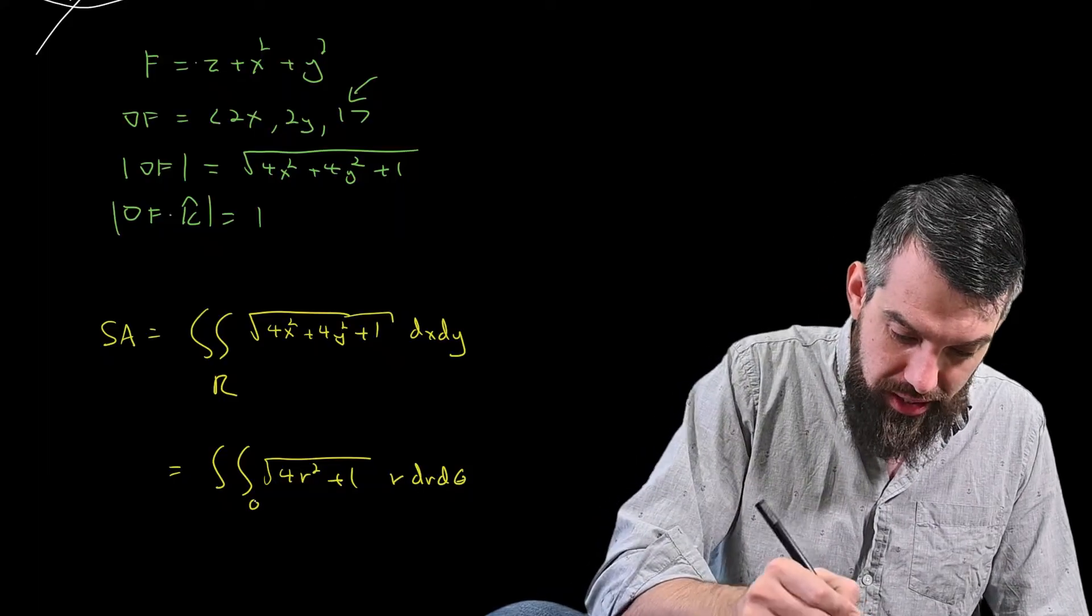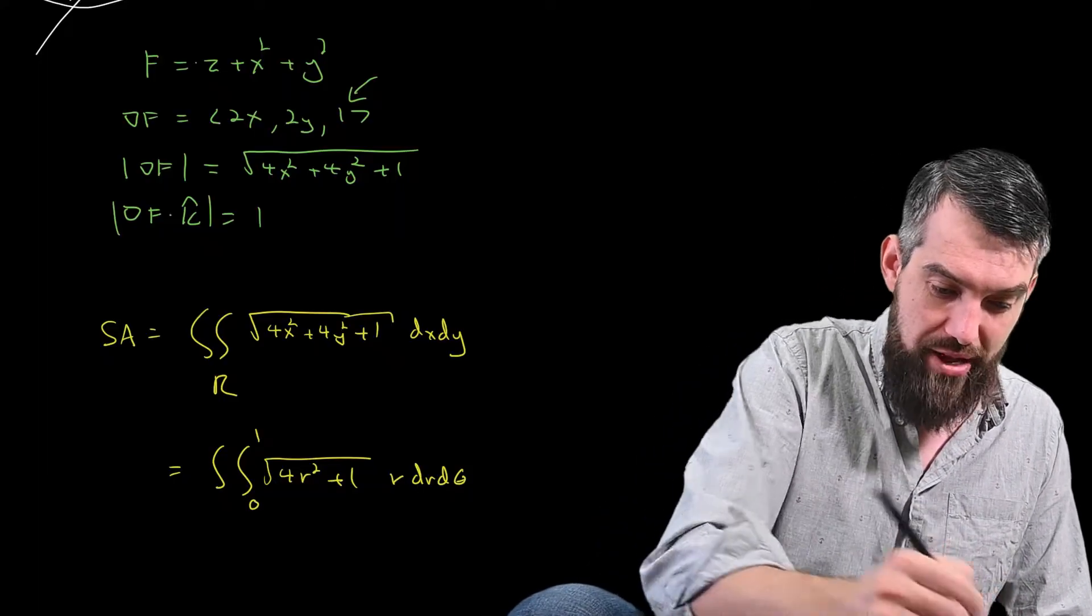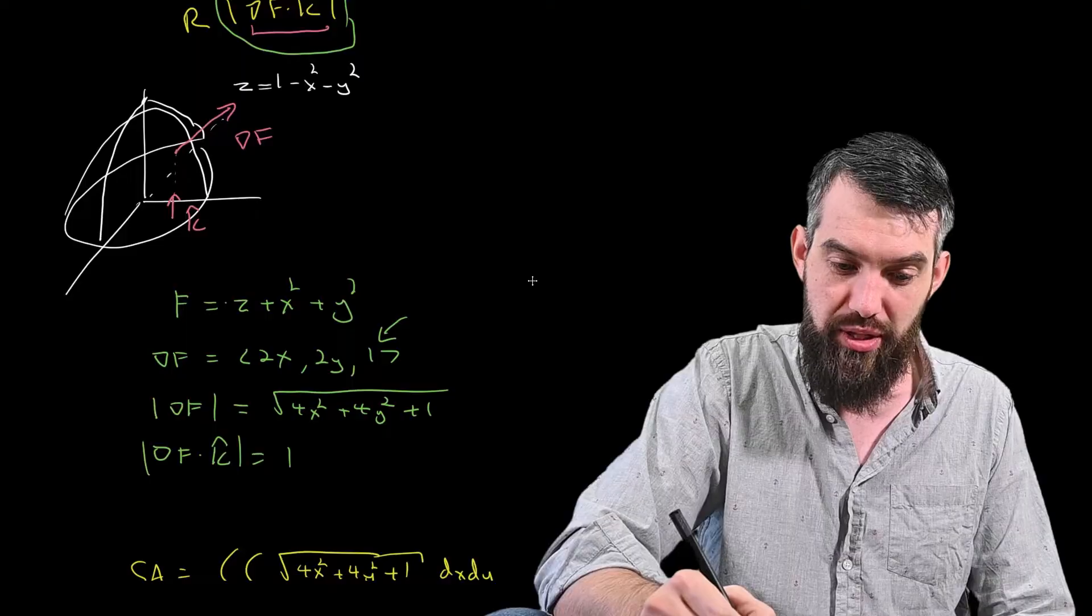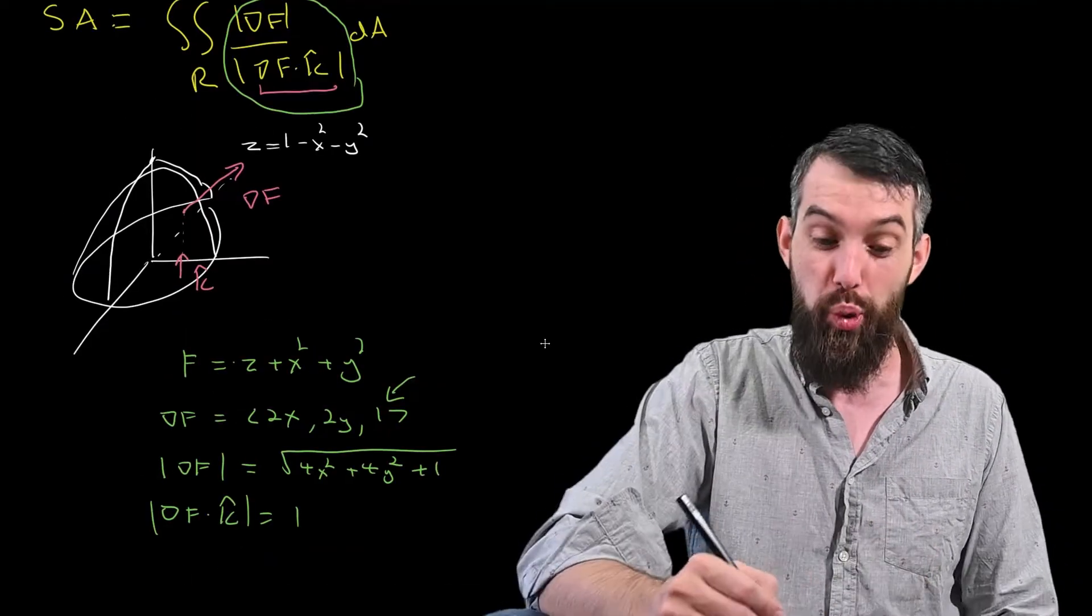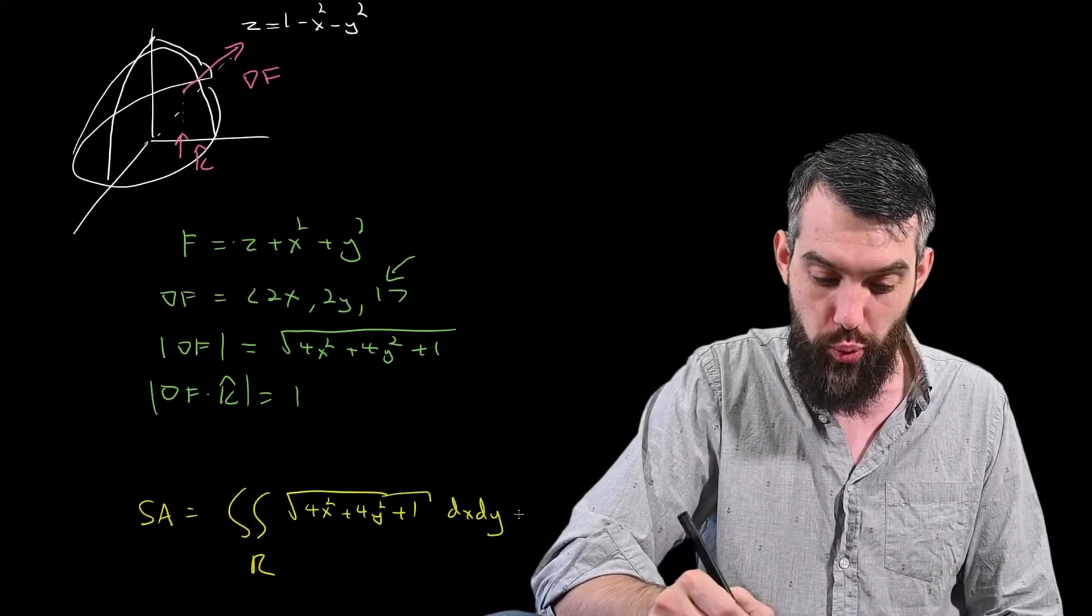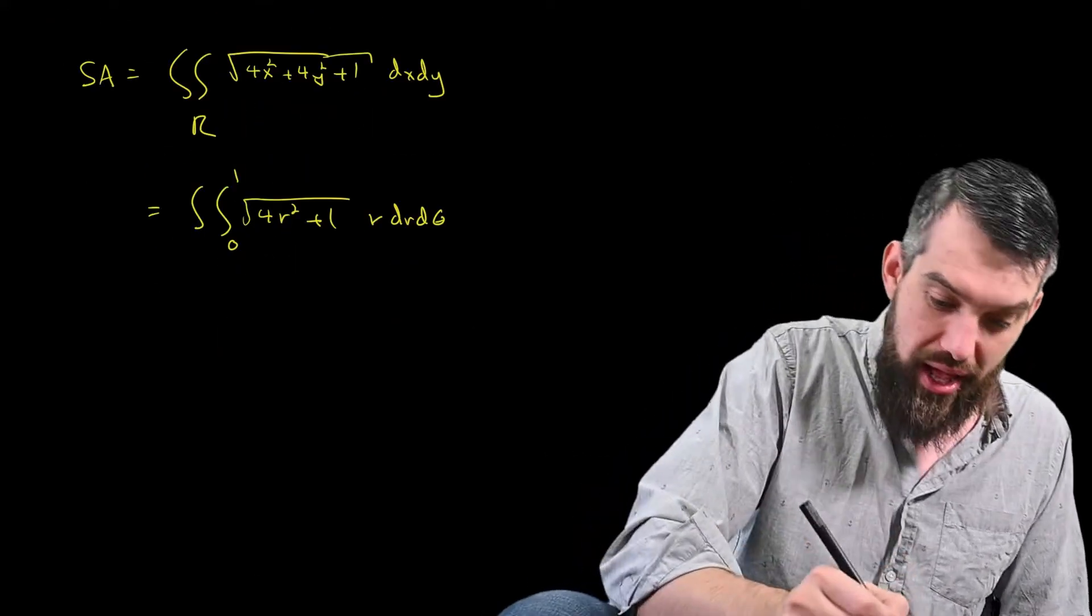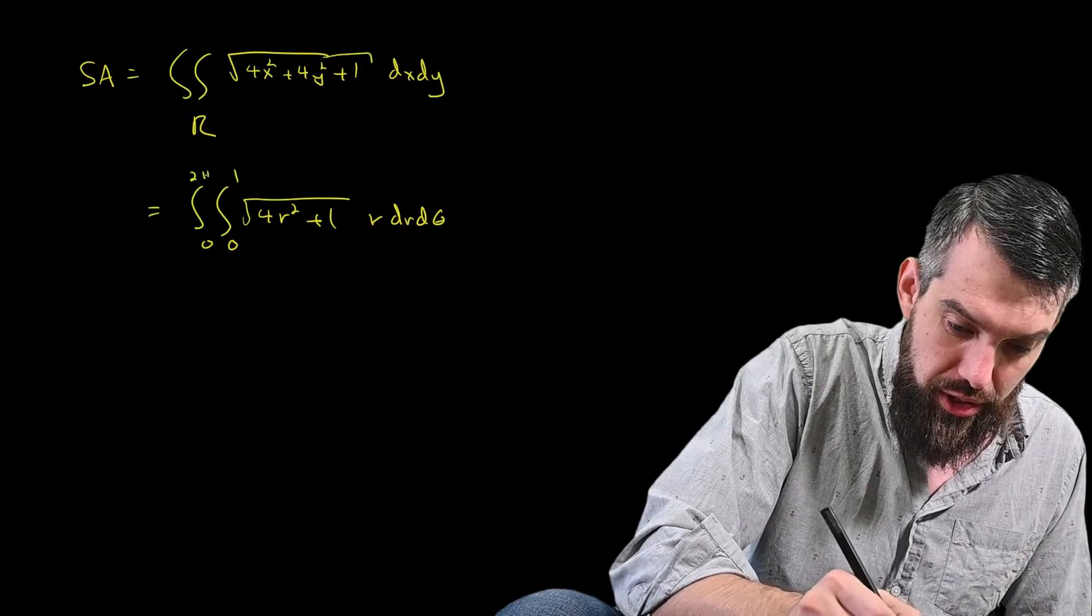What are the limits? Well, r is between 0 and 1, I believe. Let's just scroll up to make sure. Yes, this was 1 minus x squared. So when z is 0, it's x squared plus y squared equal to 1. The boundary of that circle in the xy plane is 1. And then theta is a full revolution, 0 to 2 pi.